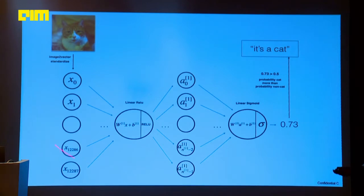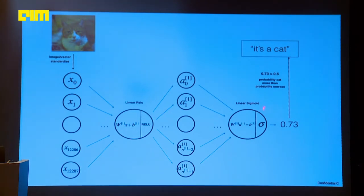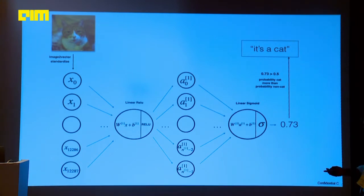We will be having 12,287 pixels. You do a dot product and the summed-up value goes to an activation function. The sigmoid activation function determines whether it is a binary class — whether it's a cat or not. A probability value above 0.5 we are considering as a cat.